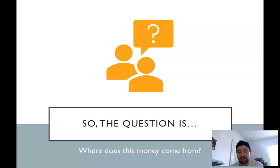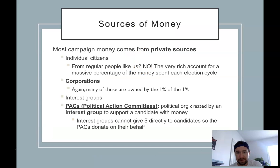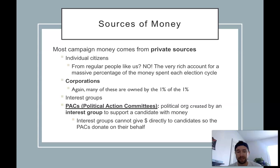Where does that money come from? It doesn't come from everyone giving a dollar equally. Most campaign money does come from private sources, including individuals, but very little comes from regular working people like teachers, firefighters, and nurses. The very wealthy — the 1% of the 1% — account for a massive percentage of the money spent every election cycle. In 2014, around 30,000 people, a tiny percentage of our 330 million people in this country, spent over a billion dollars on the 2014 election cycle.